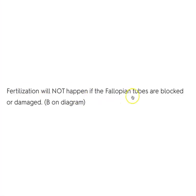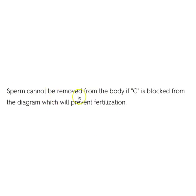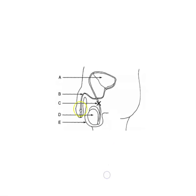Fertilization will not happen if the fallopian tubes are blocked or damaged. On the diagram, B is the fallopian tubes; this is the uterus, these are the ovaries, and this is the birth canal. Sperm cannot be removed from the body if C is blocked — C is the vas deferens, the tube that connects the testes to the outside of the body.